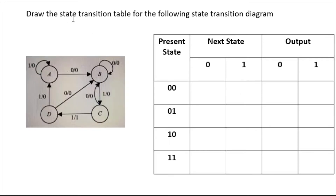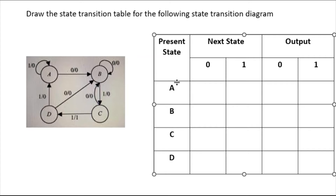Now draw the transition table for the following state diagram. The present states are A, B, C, D. I will put A, B, C, D here. Present state A — A is having no transition when input is one. With one-by-zero, input is one so put A, and output is zero.